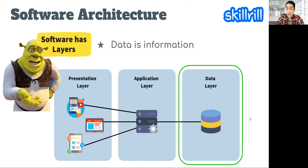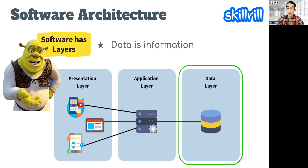What is data? Data is any information that you interact with — that you provide to an application or receive back from it. When you register on a social network platform, you give out information: your date of birth, your email, your pictures, your videos. All that information gets stored somewhere — it's not on the browser. It travels from your computer all the way to the cloud, to the data layer, and is stored in databases.